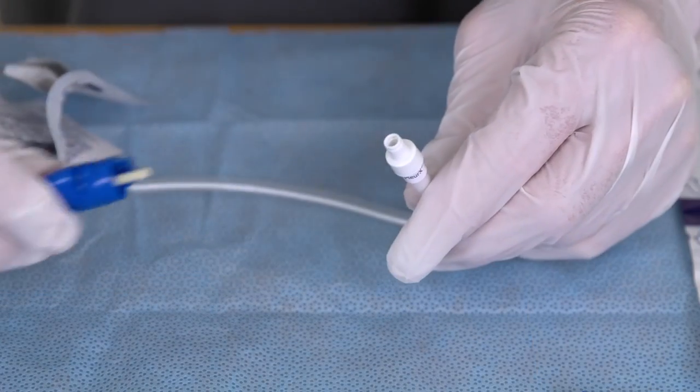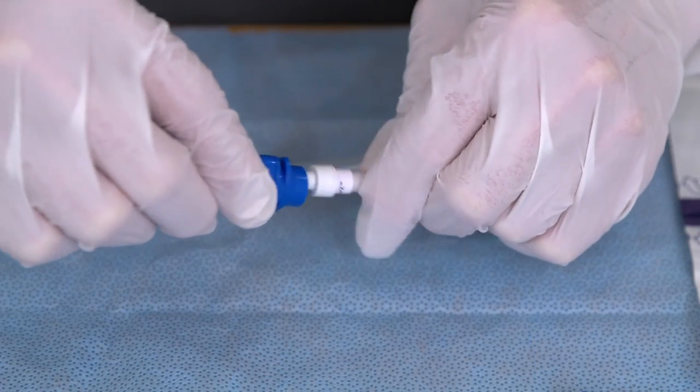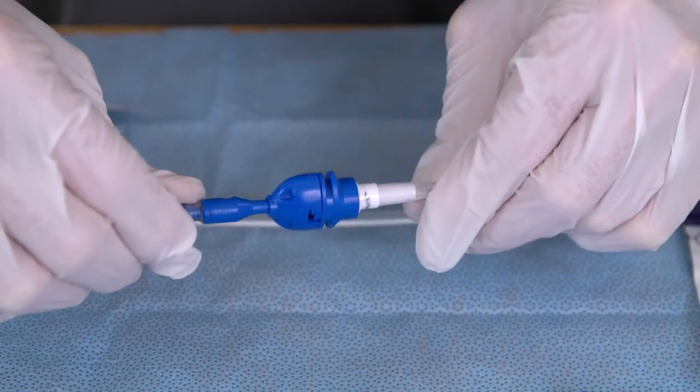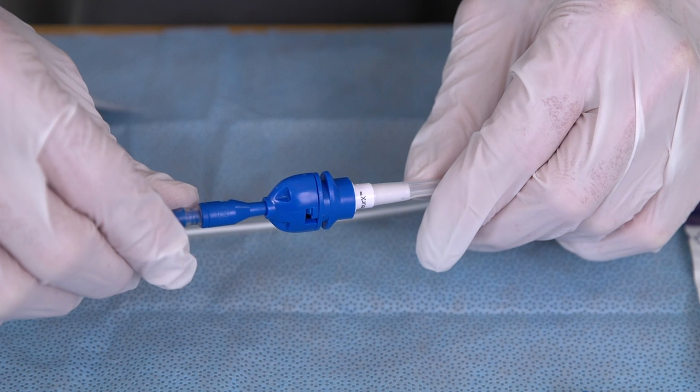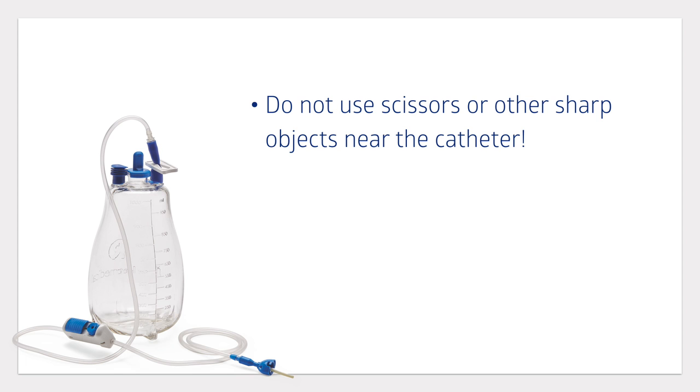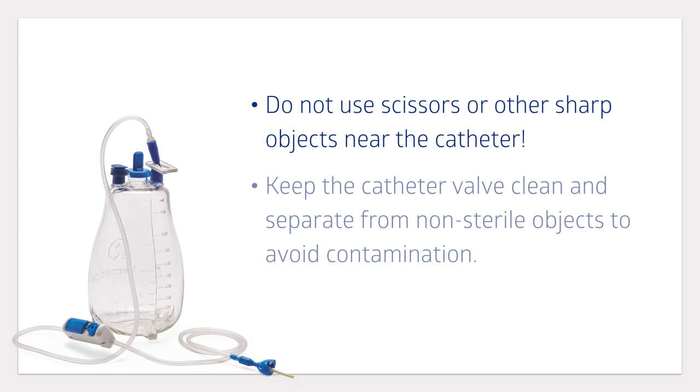Lock the access tip and catheter valve together by lining them up as shown and rotating clockwise. You will hear or feel a slight click. The drainage system and catheter are now securely connected. Do not use scissors or other sharp objects near the catheter. Keep the catheter valve clean and separate from non-sterile objects to avoid contamination.